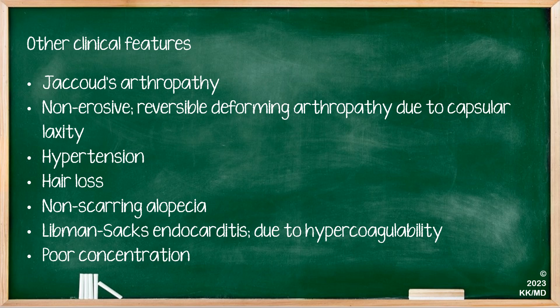You can have Jaccoud's arthropathy, which is quite classically seen with lupus — it is a non-erosive, reversible deformative arthropathy due to capsular laxity. This is an important difference from other autoimmune arthritides such as rheumatoid arthritis. The arthritis secondary to lupus is a reversible form once the lupus is under control.